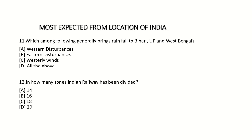11th question: Which among the following generally brings rainfall to Bihar, UP, and West Bengal? Option A: Western disturbances. Option B: Eastern disturbances. Option C: Westerly winds. Option D: All the above. Answer: Option A — Western disturbances.